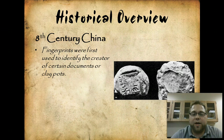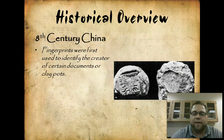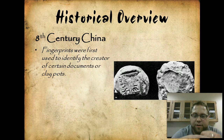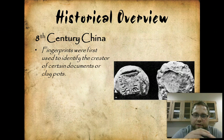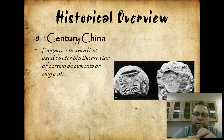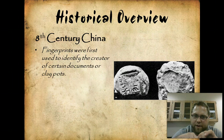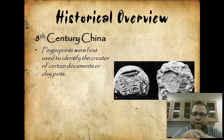In 8th century China, fingerprints were first used for identification. There are clay pots where they used fingerprints to identify who they belonged to and also to certify some documents.